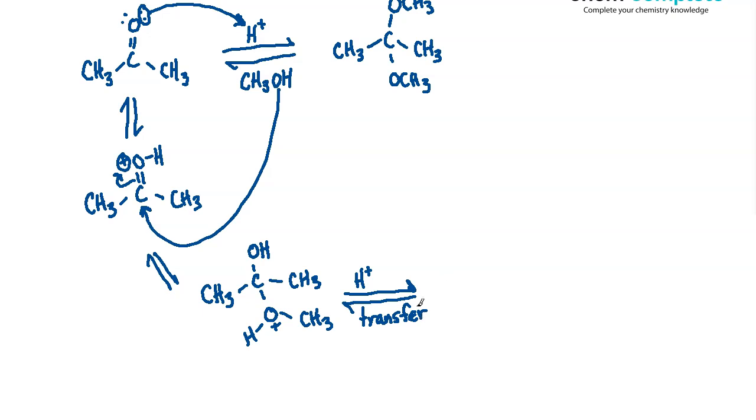And that proton transfer, when it occurs, will make water the next group to leave or to depart from this structure. So we can rearrange this here. And the step right in between here, the structure, when you have the OCH3 and the OH as the proton's been removed and is kind of being transferred, is called a hemiacetyl, meaning a halfway acetyl. We've done one of the two alcohol additions.